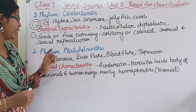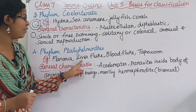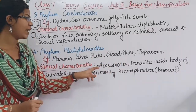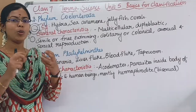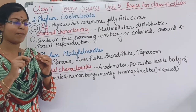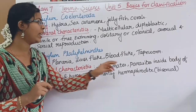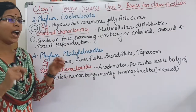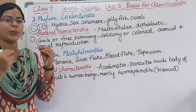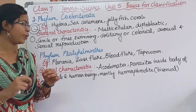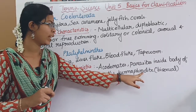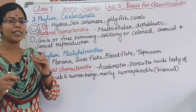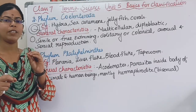The fourth division is Phylum Platyhelminthes. Examples include Planaria, liver fluke, blood fluke, and tapeworm. General characteristics: they are acoelomates — that is, there is no fluid-filled body cavity. They are parasites inside the body of animals and human beings. Most are hermaphrodites, meaning they are bisexual — both male and female sex organs are present.